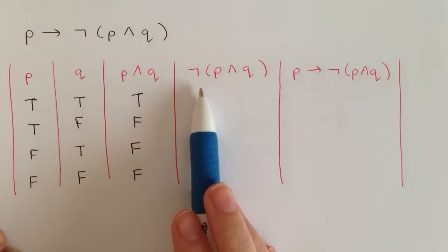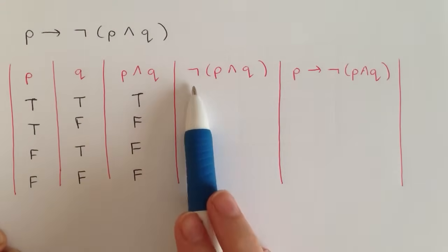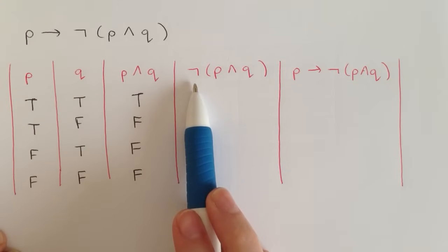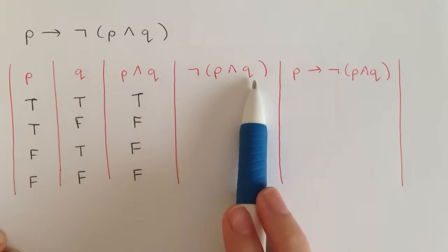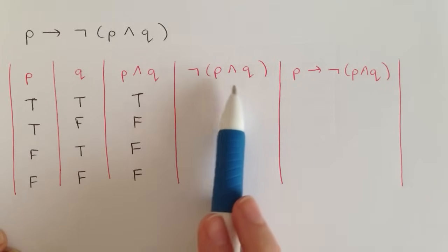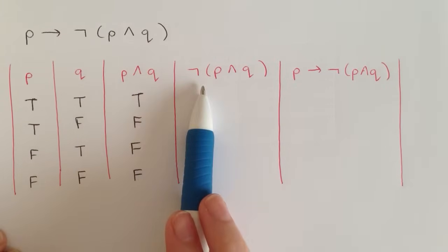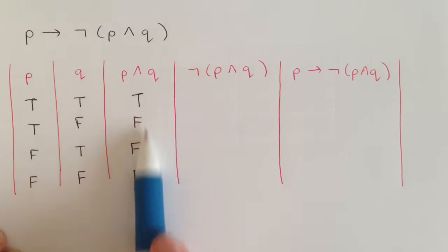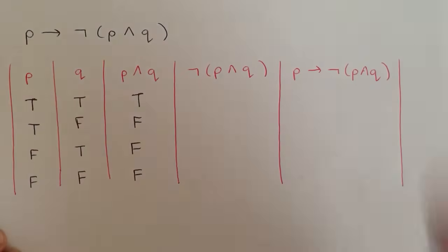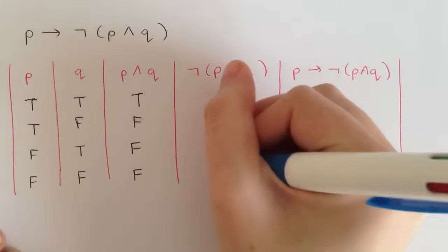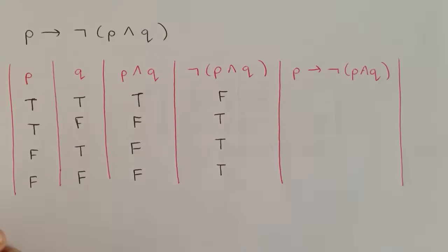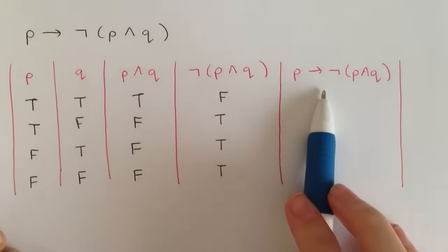Now we go to the next column: not p and q. Anytime you have this negation symbol it's going to be the exact opposite of what it's in front of. So the not p and q column is going to be the exact opposite of the p and q column, which gives us false, true, true, true.